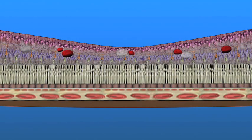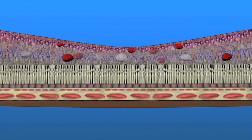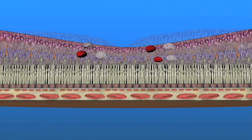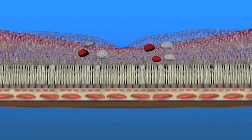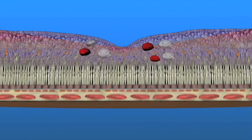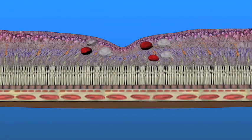With macular edema, fluid leaking from the retina's blood vessels can cause the macula to swell or thicken. Because the macula is responsible for our central or pinpoint vision, macular edema interferes with clear vision.